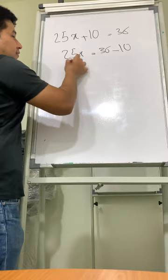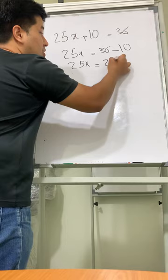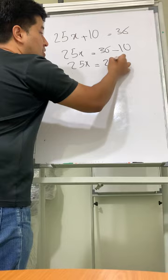Now we're going to say 25x equals 36 minus 10, which equals 26. And then very simply, x equals 26 over 25. That's how easy a linear equation can be solved.